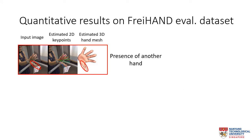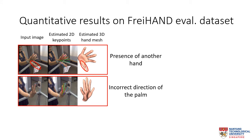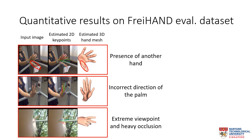Furthermore, there are still some limitations of our proposed method as seen in the FreiHand dataset. For example, it is interesting to note that in the presence of another hand, our network is unable to differentiate the two hands and incorrectly identifies the second hand as part of the thumb. In another example, the network is also not robust enough to differentiate the direction of the palm, and the network may also fail under extreme viewpoints where the hand is heavily occluded.